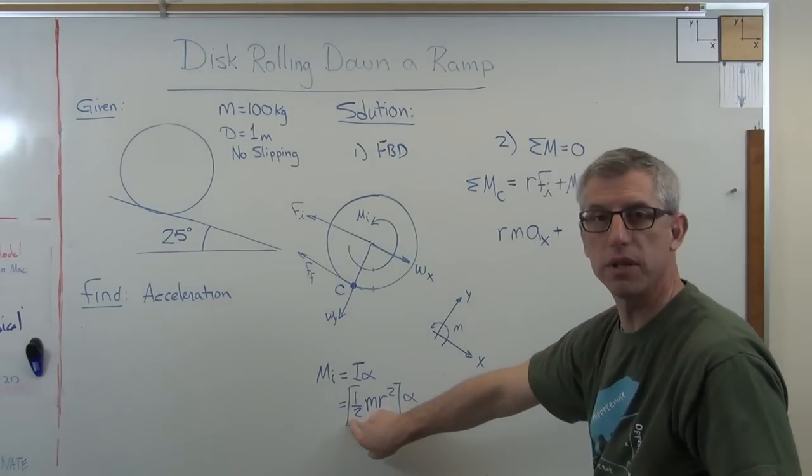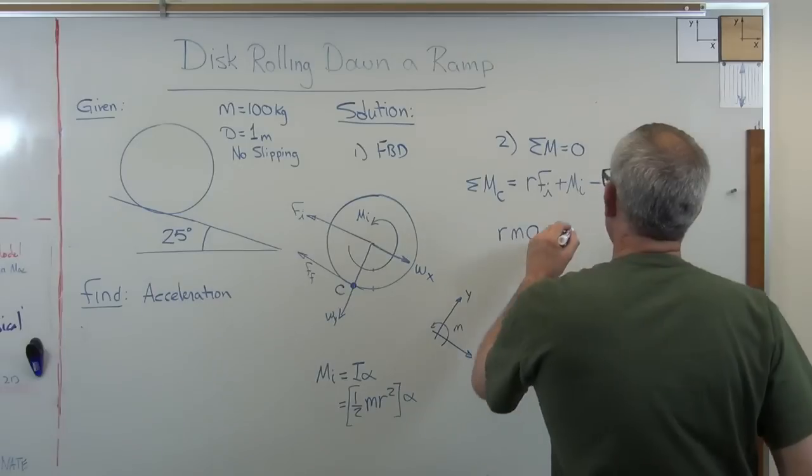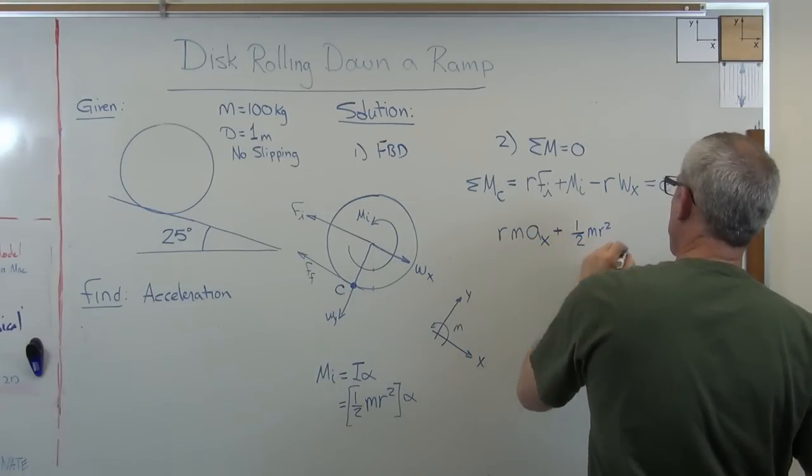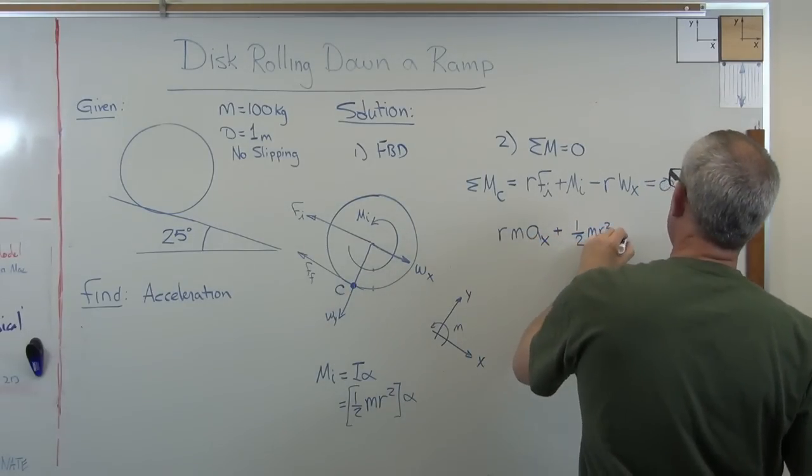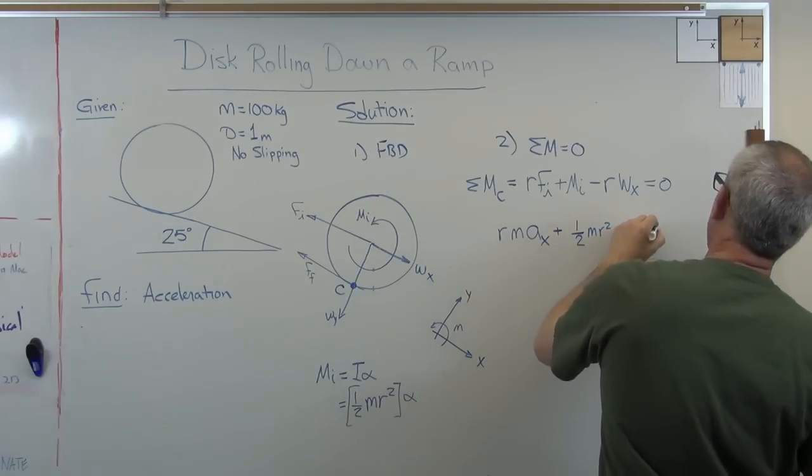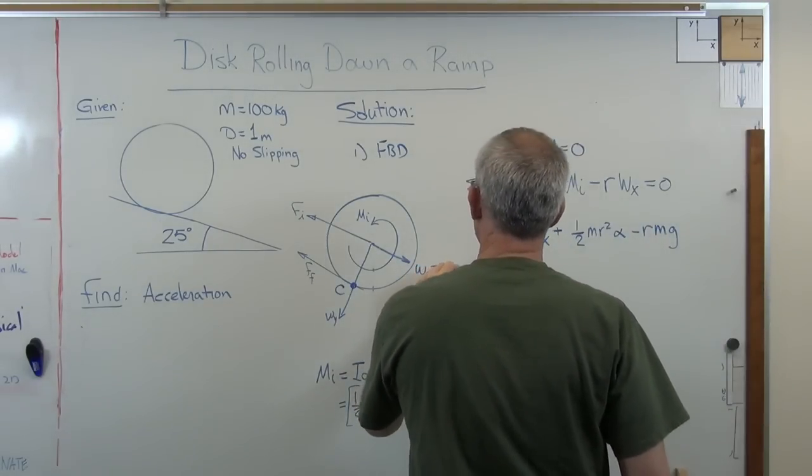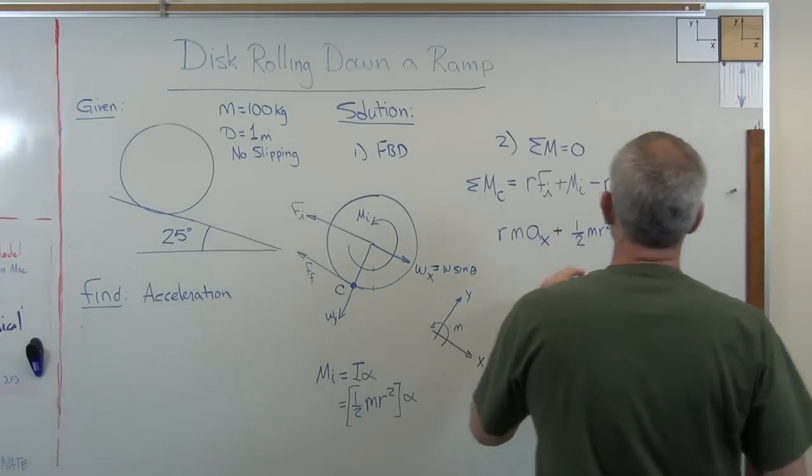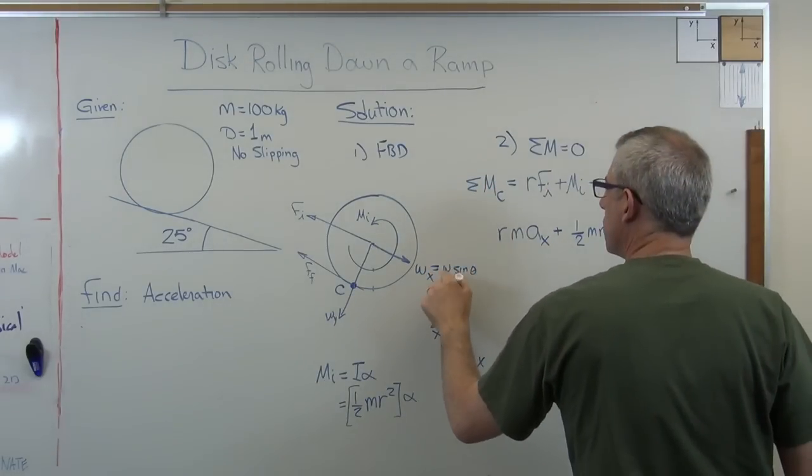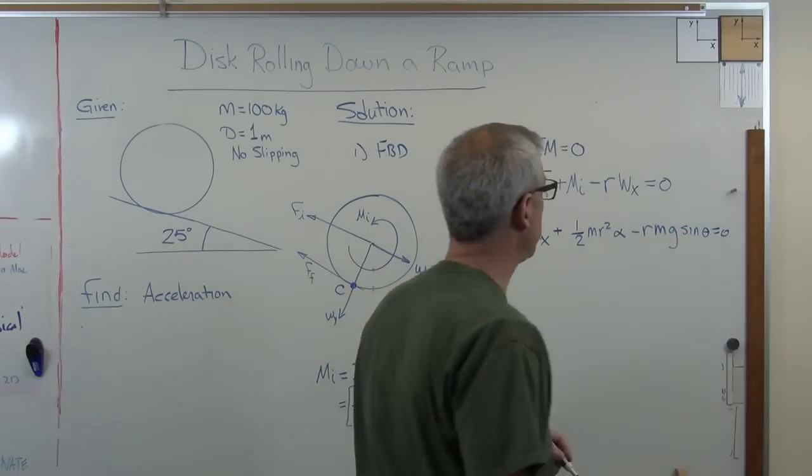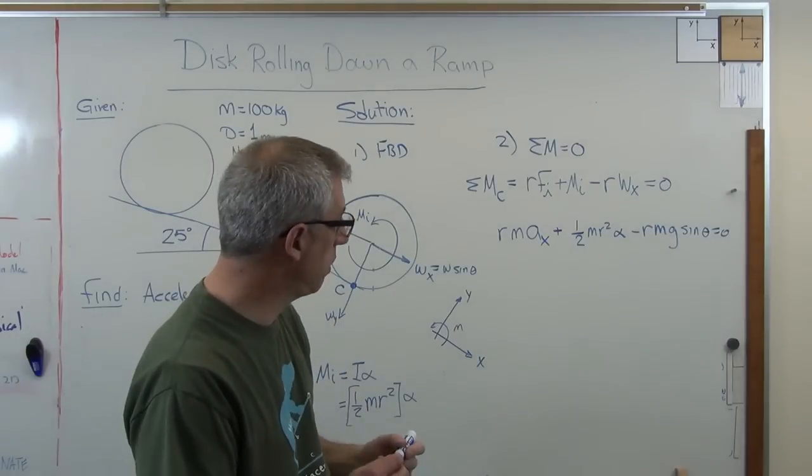Plus M I. Well, that's mass moment of inertia times the angular acceleration. Well, for this, mass moment of inertia is one half M R squared times alpha. That's how we're going to write the mass moment of inertia. That's the expression. If you go look this up, it's in the book somewhere. So I'm going to write one half M R squared alpha minus R M G sine theta. And that all equals zero.